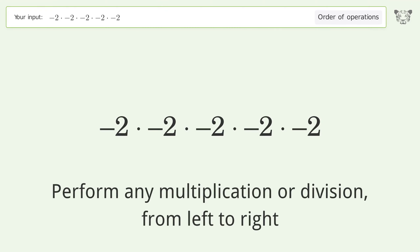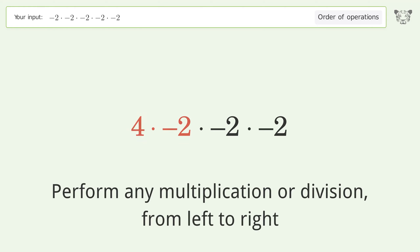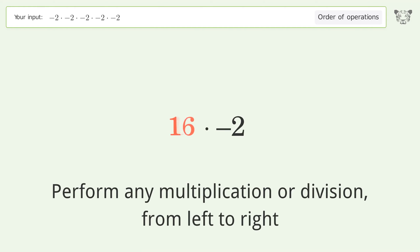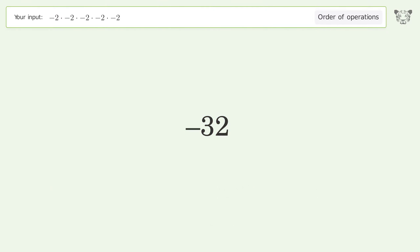Negative 2 times negative 2 equals 4. 4 times negative 2 equals negative 8. Negative 8 times negative 2 equals 16. 16 times negative 2 equals negative 32. And so the final result is negative 32.